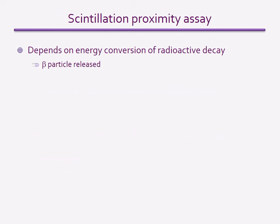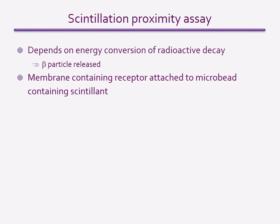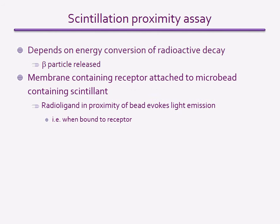The scintillation proximity assay is a particular type of ligand binding assay that follows the same principles as discussed before but uses a slightly different method. Instead of using cell or tissue homogenates and separating out bound and free ligand to measure in a scintillation counter, this method puts the receptor right next to the scintillant so that only the bound radioactivity is captured. Isolated membranes containing the target receptor are attached to very small beads filled with scintillant, which can only detect highly localised radioactivity. When the radio ligand is in solution, it is too far away from the scintillant to be detected, so only the radio ligand that binds to the membrane on the bead activates the scintillant and is recorded.